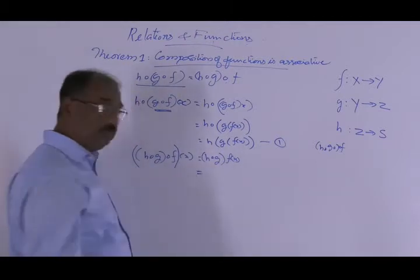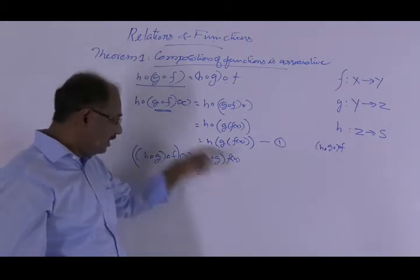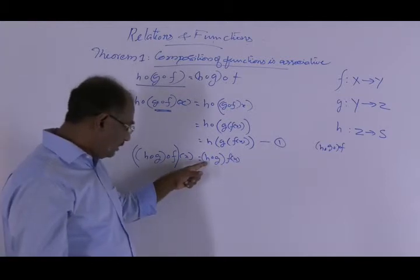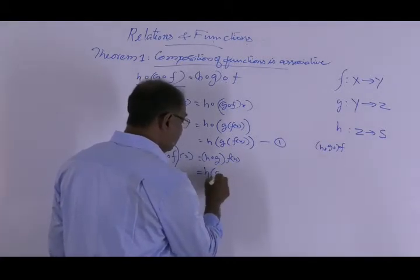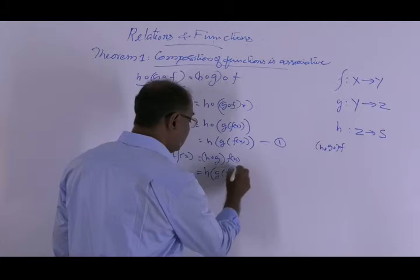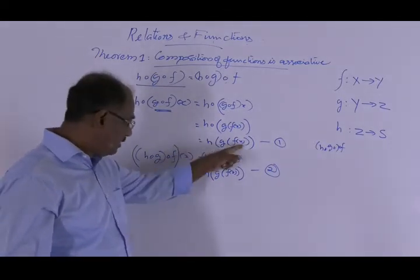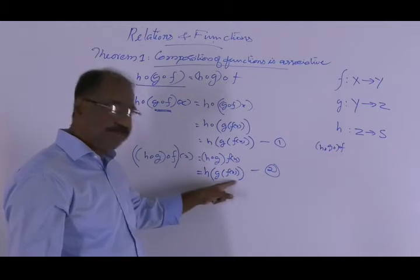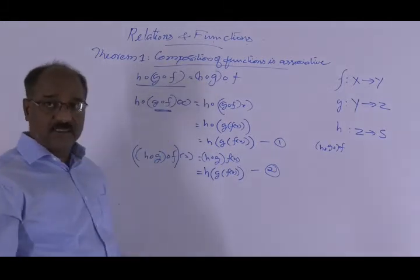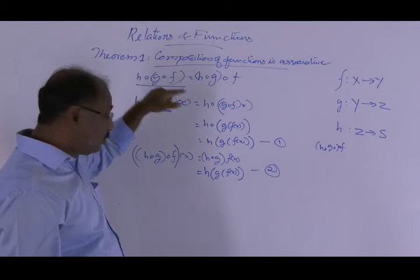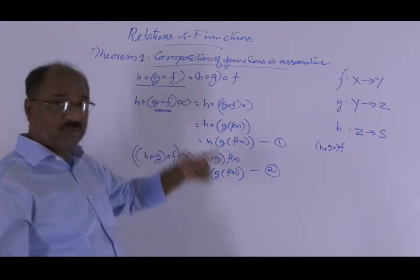Here we consider f(x) as a single element — it is the image under f, so we apply h∘g to f(x). Now consider h∘g as a composition of two functions. This is equal to h of g(f(x)). Considering these two results, both sides equal h(g(f(x))), and this is true for all x. Which shows that these two are the same functions — that is, h∘(g∘f) equals (h∘g)∘f. Therefore, the composition of functions is associative.